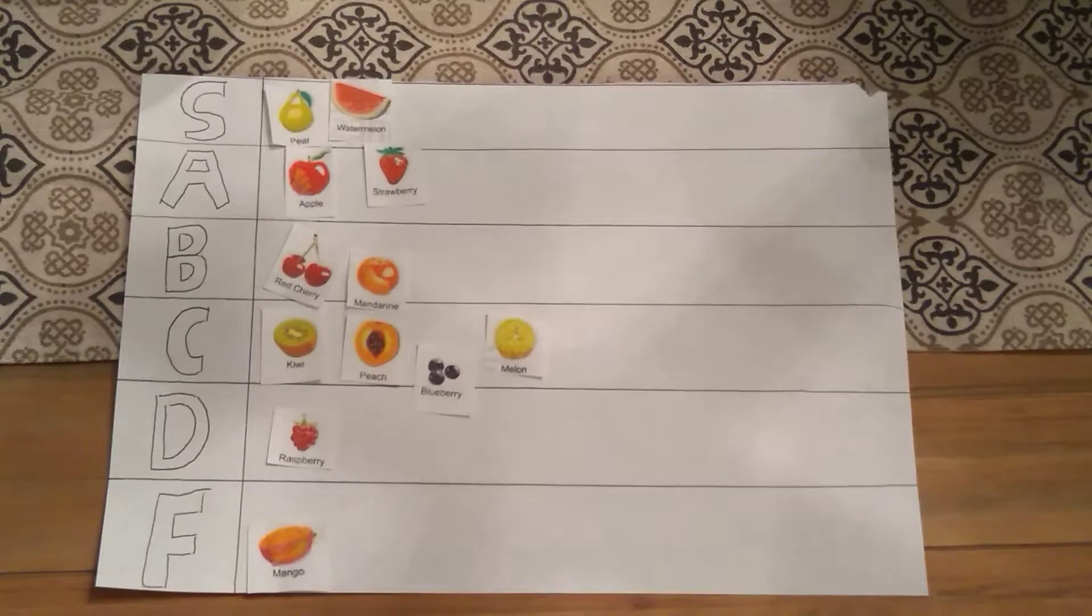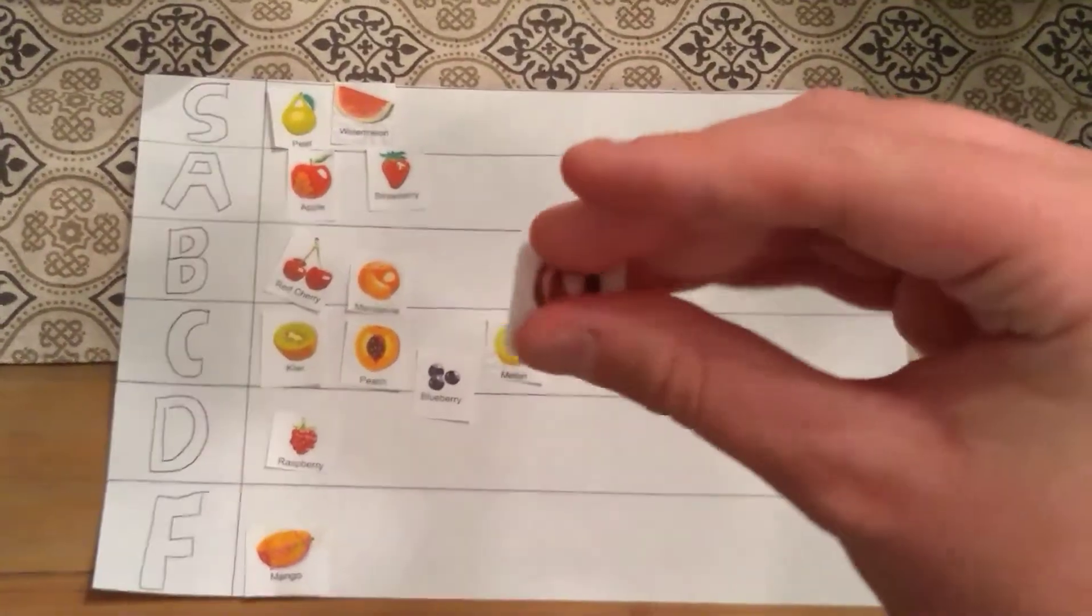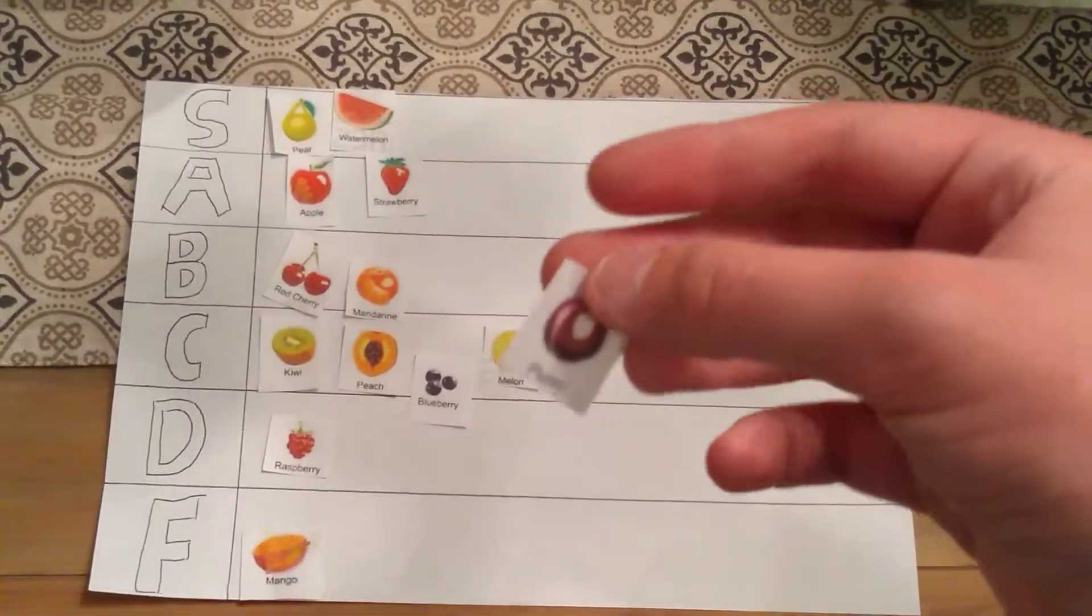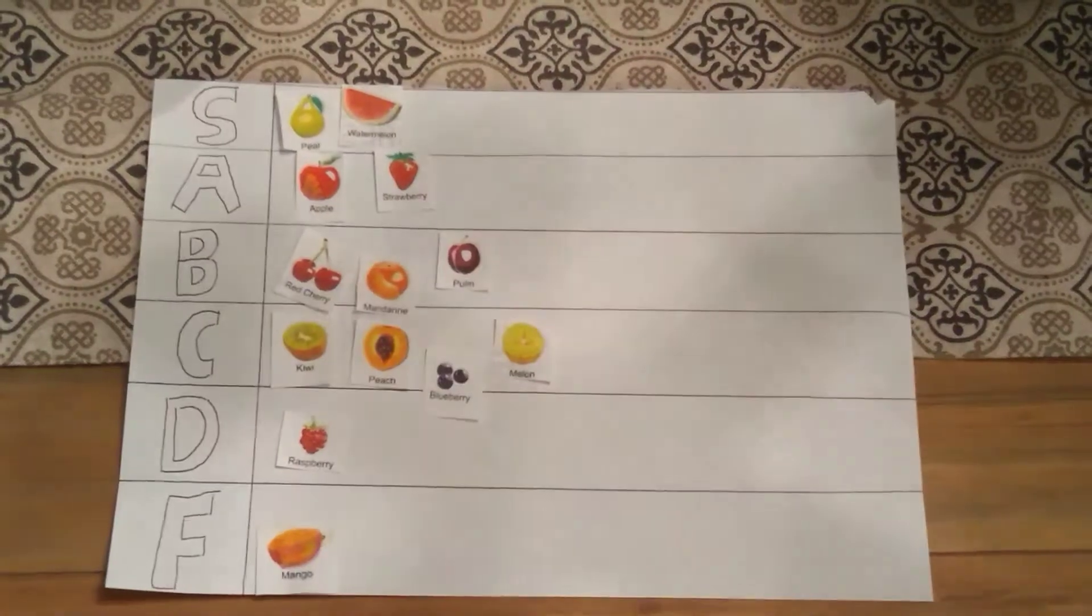Next up, we have plums. Which I actually quite enjoy. Plums are like an apple. From what I taste it, it's like an apple, sort of. Which is why it's going in the B tier. But they're not as good as apples.